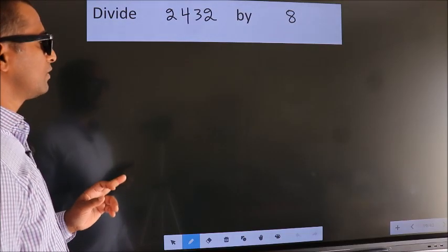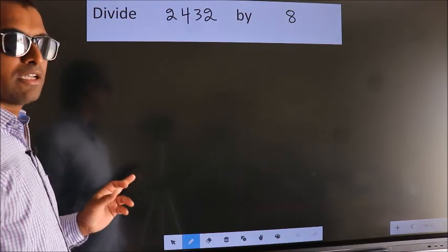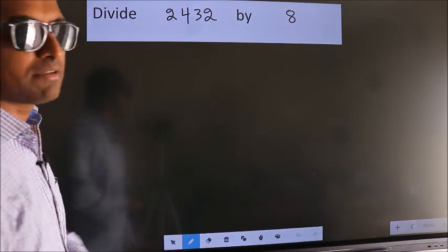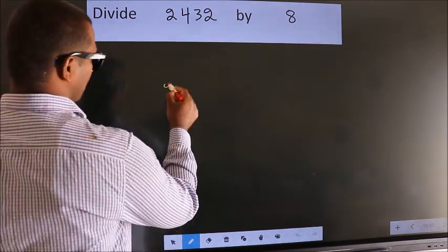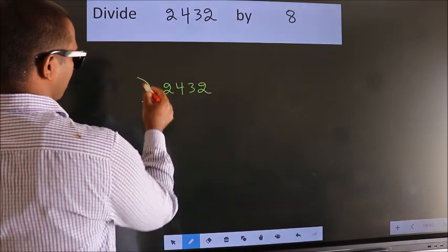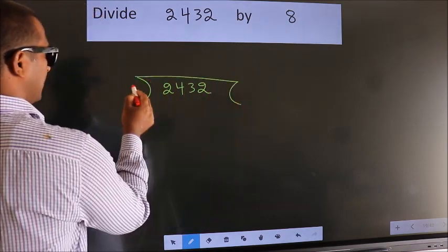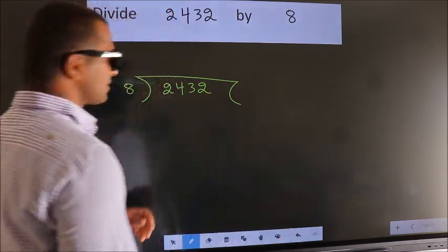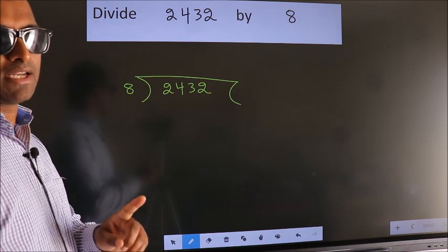Divide 2432 by 8. To do this division, we should frame it in this way. 2432 here, 8 here.